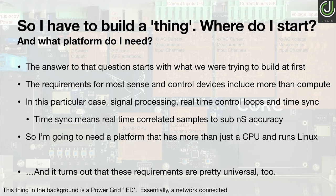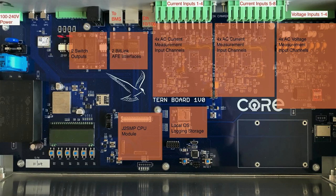In our case, just about everything we make is signal processing. At the end of the day, even something like a cell phone is a mixed signal device — it has radios, it has sampled data. For things like this real-world device in the background — an energy monitor — what it does is measure voltages and currents time-synchronized to GPS time on the energy grid. This is for renewables integration, and it's why we developed the J-Core platform inside the company in the first place.